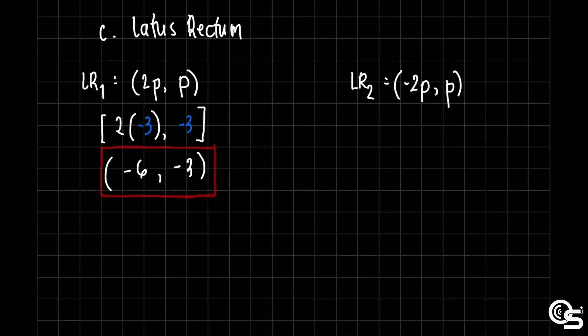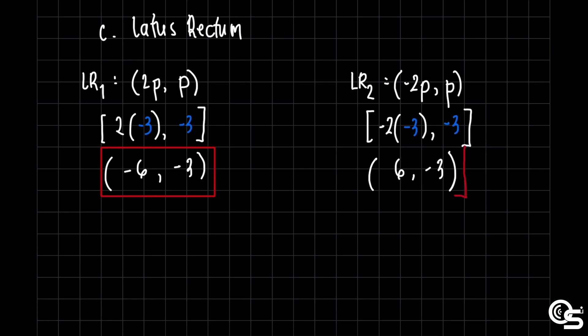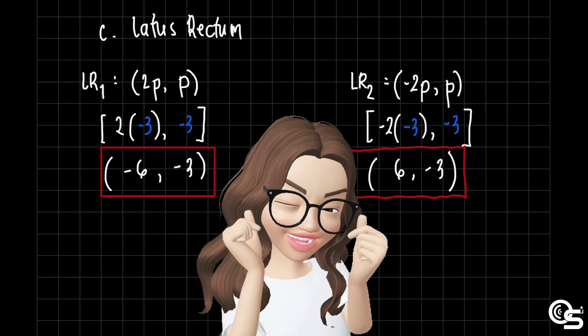Next, for LR₂: negative 2 times negative 3 is positive 6, comma negative 3. So LR₂ is at (6, negative 3). These are the endpoints of our latus rectum.